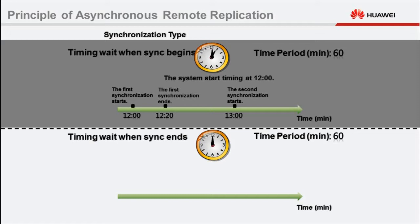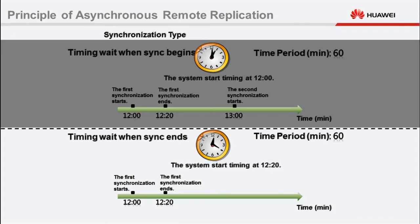If data synchronization is not complete within this period, the storage system waits until the synchronization is complete and then starts the next data synchronization. For timed wait when synchronization ends: the storage system does not start timing when the initial synchronization starts at 12 PM. Instead, the storage system starts timing after 20 minutes, when incremental data synchronization is complete. 60 minutes later, at 1:20 PM, the storage system starts the second synchronization.